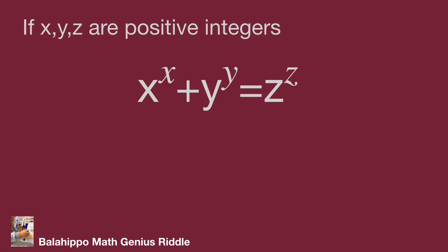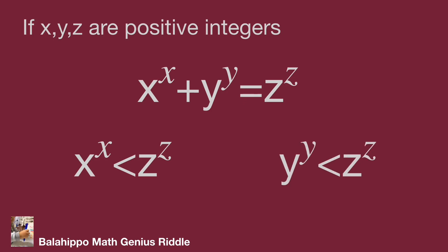While x, y, z are positive integers, it leads to x^x < z^z, because z^z is the sum of two items with positive integers. Therefore y^y is also less than z^z. Then x^x < z^z, so x < z. And y^y < z^z, then y < z.